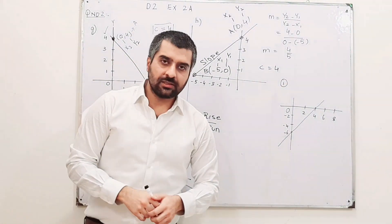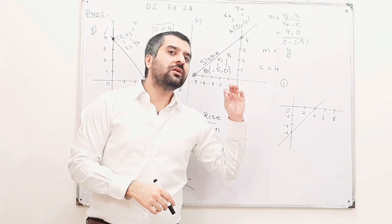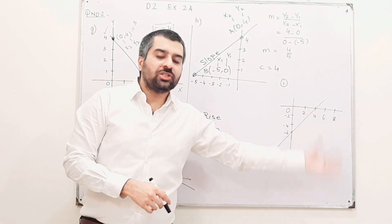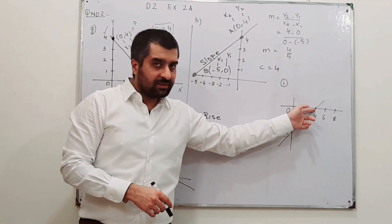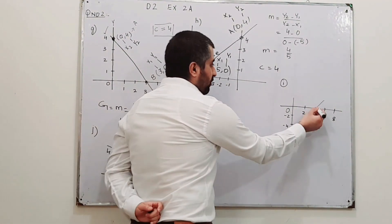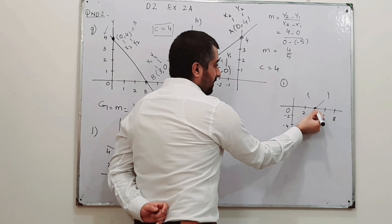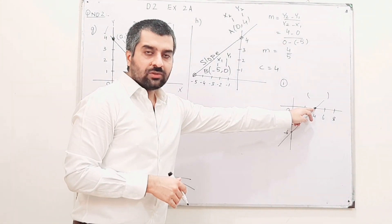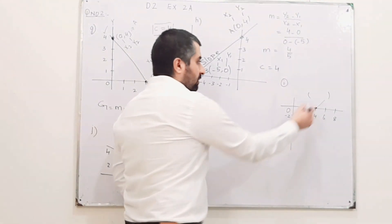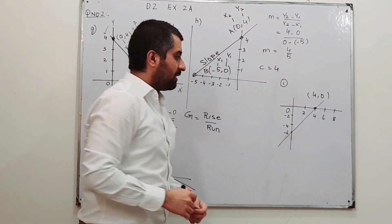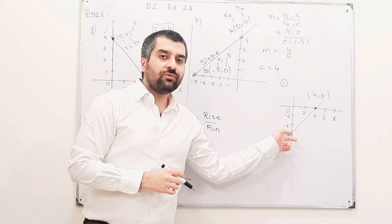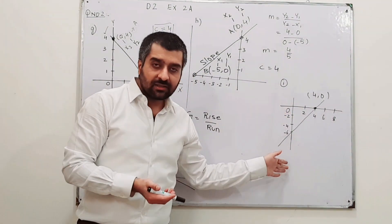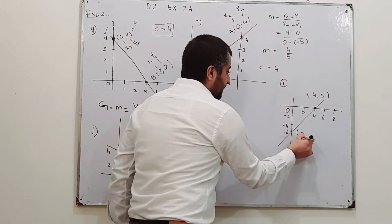For part number I, the same approach will be used. To find the gradient, take two points on the line — any two points, but they must be on the line. I am going to consider one point on the x-axis and the other on the y-axis. The point on the x-axis has x = 4 and y = 0, so coordinates (4, 0). The second point on the y-axis has x = 0, while the value of y is minus 6.